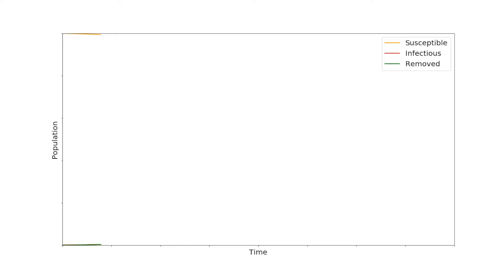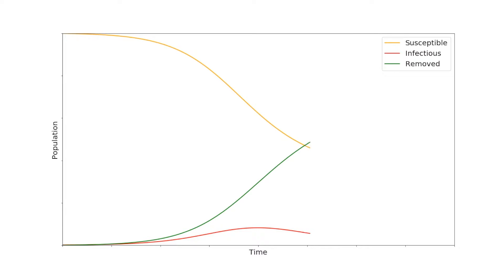The different groups in the model change in size as time progresses and the virus moves through the population. We can begin with a very small infectious population who has the potential to infect anyone in the susceptible population. As the infectious population increases in size, more and more people from the susceptible population will become infected. People in the infectious population will start to recover or pass away over time, moving them to the removed population. When enough of the population has gained immunity, the spread of the infection will slow and the infectious population will gradually decrease.